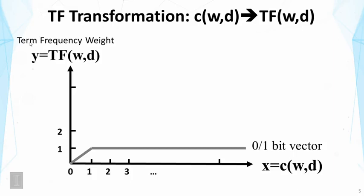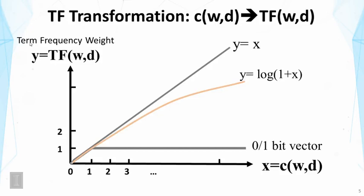Now what about using term count as a TF weight? Well, that's a linear function, right? So it has just exactly the same weight as the count. Now we have just seen that this is not desirable.